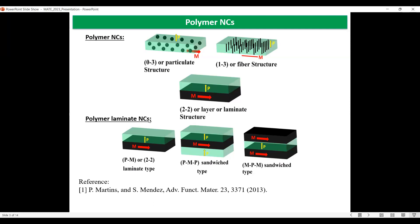In polymer nanocomposite laminate structures, there are three kinds: PM bilayer structure, PMP sandwich-type structure, and MPM sandwich-type structure. In this study, we are studying the first two types — the two-two PM laminate structure and the PMP sandwich-type structure.